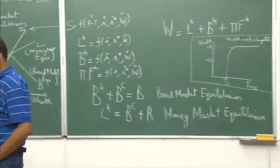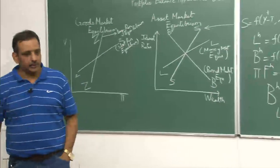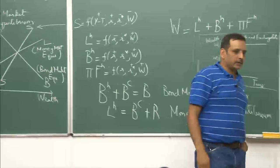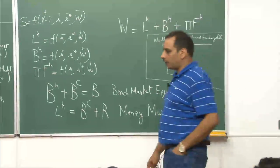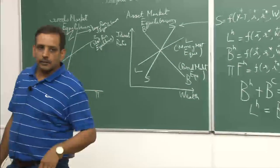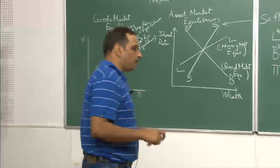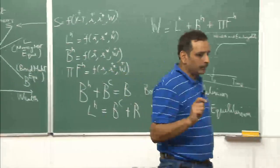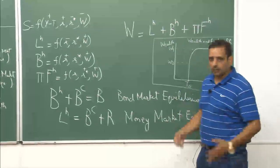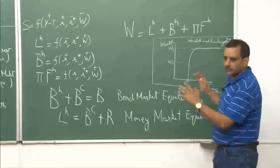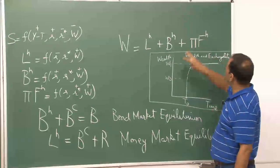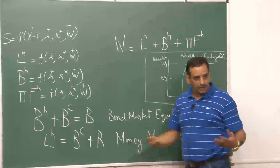Unlike the monetary approach to balance of payment, where you had assumed that each one of us is a risk neutral person and that domestic and foreign bonds are perfectly substitutable. But here, because you are risk averse and do not want to take risk, you want to hold all types of assets — domestic bonds, foreign bonds, and idle money.